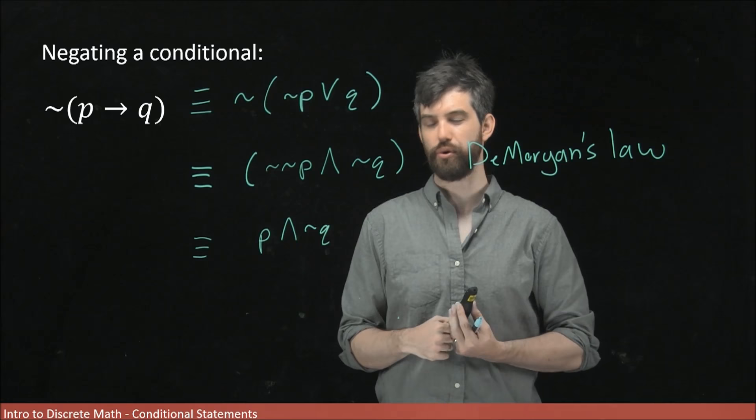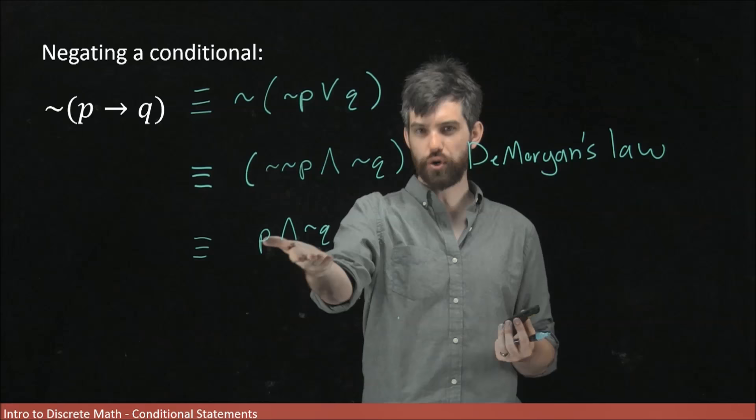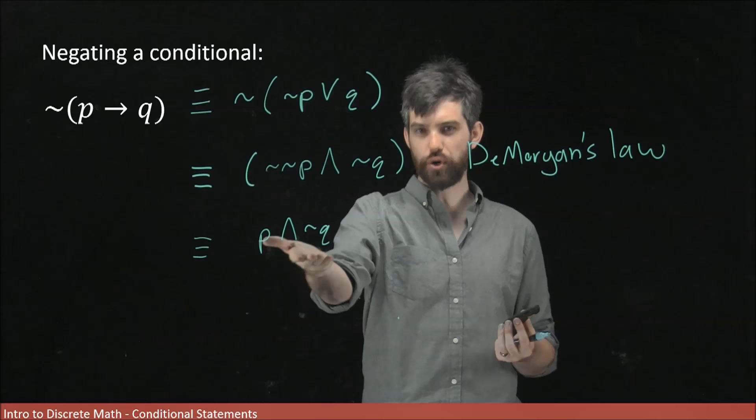So what we managed to prove here by showing a bunch of logical equivalences is the result that is the exact same result we would have gotten if we'd just gone to the truth table and negated the column for p implies q. So we've got the same result, which is good.